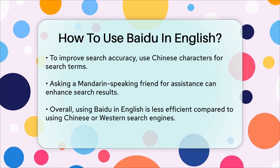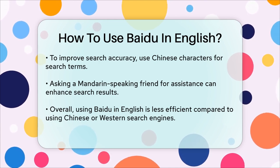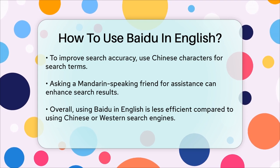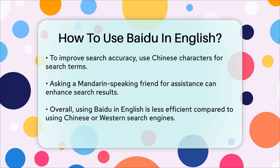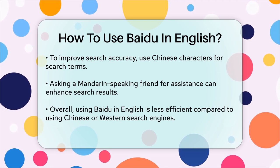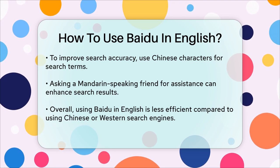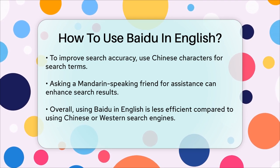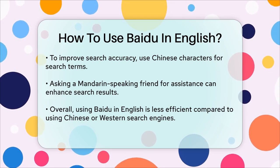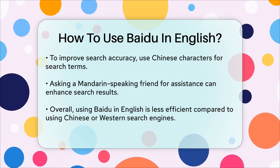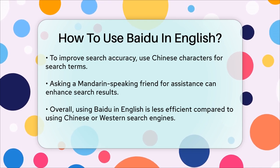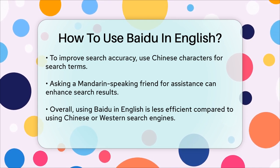In summary, while you can use Baidu in English, it's not the most efficient way. For better results, use Chinese search terms or rely on translation services. If you're looking for information in English, Western search engines are still your best bet. Thank you so much for visiting us!